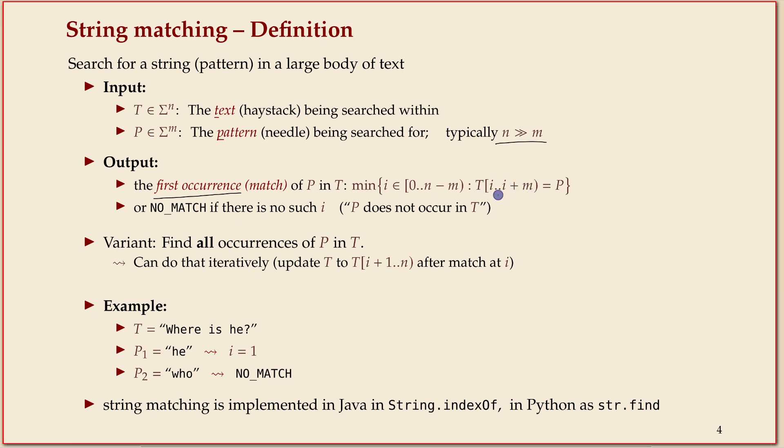So that the text, if you start at position i and read for m characters, that piece of substring is exactly the same as our pattern. We find the smallest i so that i up to i plus m—that's T[i] to T[i+m]—should be exactly our pattern P. Sometimes it doesn't occur, and then you just return some special value, no match. The variant where you find all occurrences, you can do that iteratively.